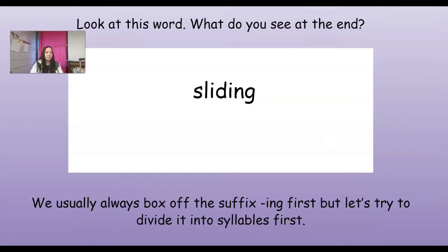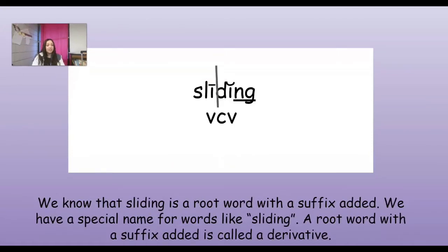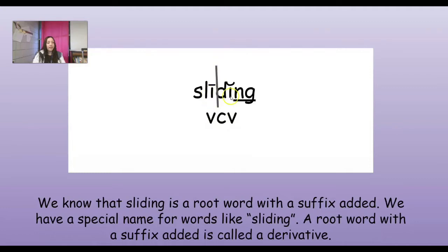All right, so we're going to look at this word. What do you see at the end of this word? That's right, it's got suffix ING. So we usually box off suffix ING. But first, let's try to divide this word into syllables. If I divide this up into syllables and say vowel, consonant, vowel, I would mark my vowels. Over here, my vowel would be long - I would say 'slide.' And over here, my vowel would be short - 'sliding.'